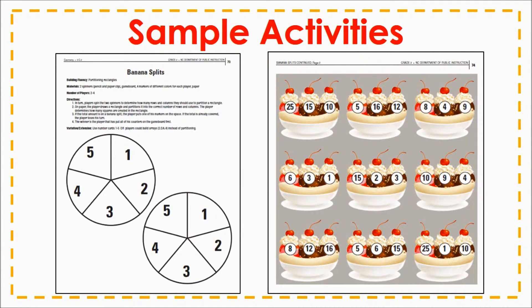Students in second grade also gain experience drawing their own models by partitioning rectangles into equal size squares. In this game, Banana Splits, students spin to determine the number of rows and columns to draw in their own rectangle. They then place one of four counters on the total number of squares in the rectangle on the Banana Splits side. The first player to use all of their counters wins the game. Playing games is a good way to introduce, practice, or review concepts throughout the year.